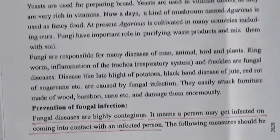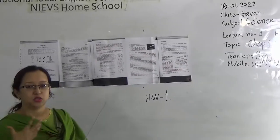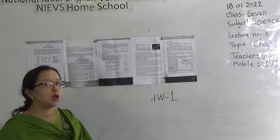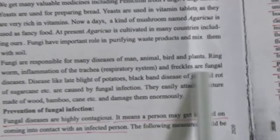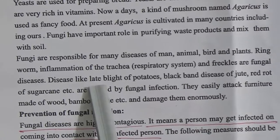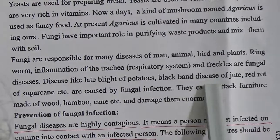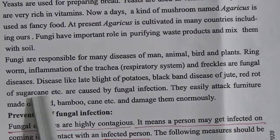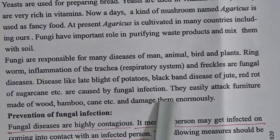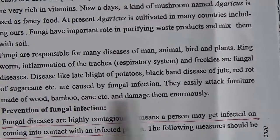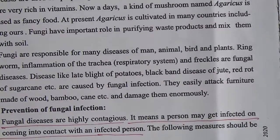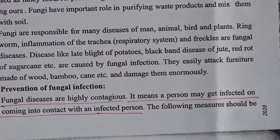Fungi are responsible for many diseases of humans, animals, birds, and plants. Ringworm, inflammation of the trachea, and freckles are fungal diseases. Diseases like late blight of potatoes, black band disease of jute, and red rot of sugarcane are caused by fungal infection. Fungi easily attack furniture made of wood, bamboo, and cane and damage them enormously.